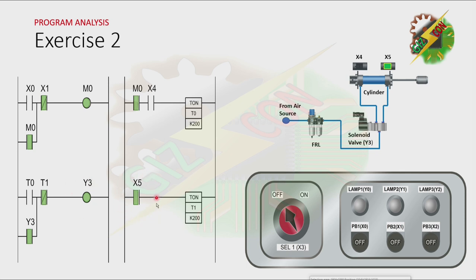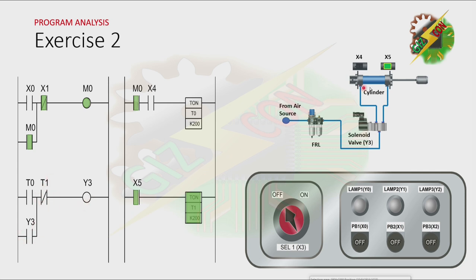Now, because X5 is on, that will make timer T1 to turn on after 2 seconds. Because T1 is on, all the contacts of T1 will change. The normally closed contact of T1 will be open. And that will cause Y3 to turn off. And because of that, the cylinder will retract.